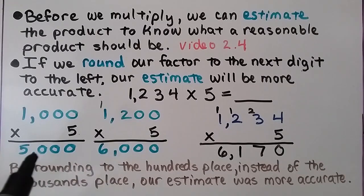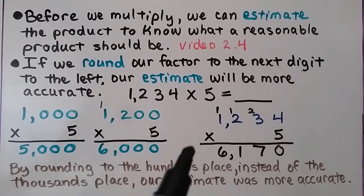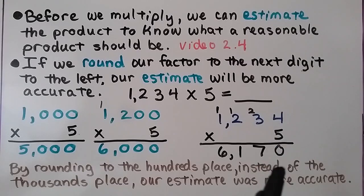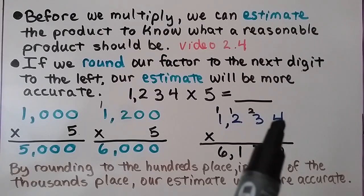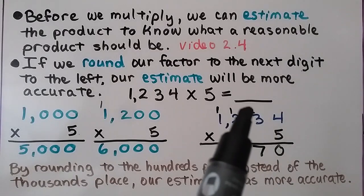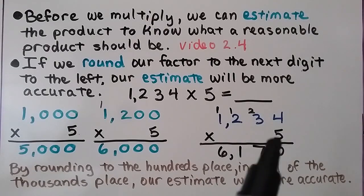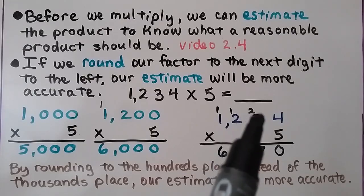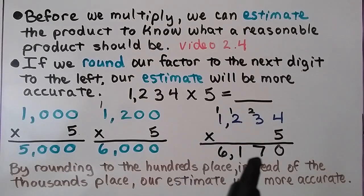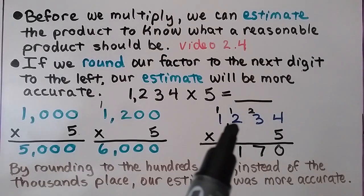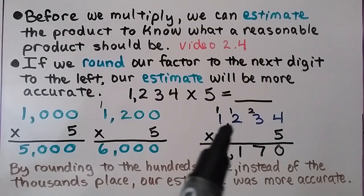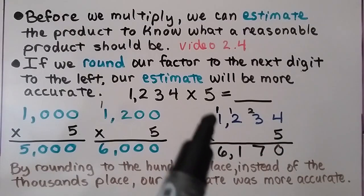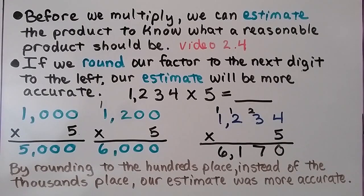The two estimates are 5,000 and 6,000. When we do the actual problem — 1,234 times 5 — we start with the ones place: 5 times 4 is 20, regroup the 2, put the 0 down. 5 times 3 is 15, plus 2 more is 17 — regroup the 1, put the 7 down. 5 times 2 is 10, plus 1 more is 11 — regroup the 1, put the 1 down. And 5 times 1 is 5, plus 1 more is 6. We have 6,170.